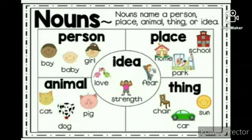Nouns name a person, place, animal, thing or idea. Person, like baby, boy, girl. Animal: cat, dog, pig. Place: home, school, park. Thing: car, clock, sun. Idea, like love, strength and fear.